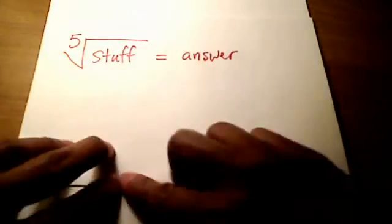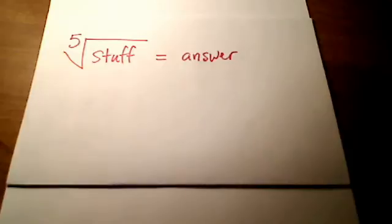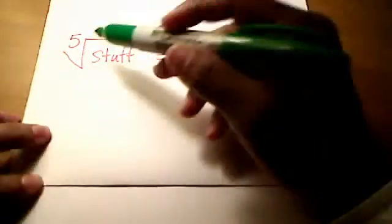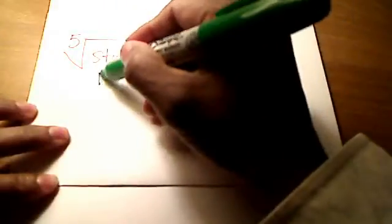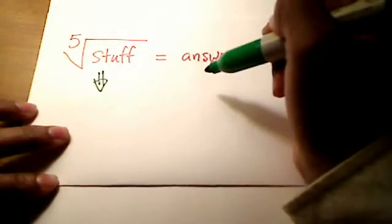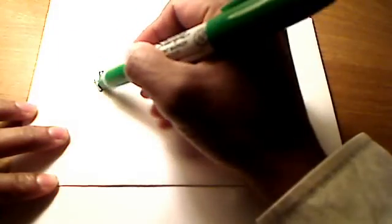I've got the fifth root of some stuff is equal to whatever the answer is, some answer. OK? Now this is pretty funny. It doesn't really make a whole lot of sense mathematically, but what do we mean by a fifth root? Is there another way to rewrite stuff, the fifth root of stuff? Oh yeah, we could rewrite this thing here.